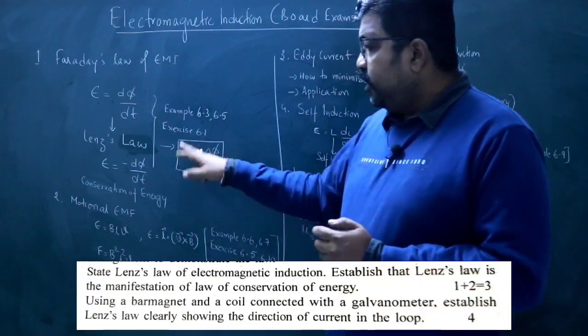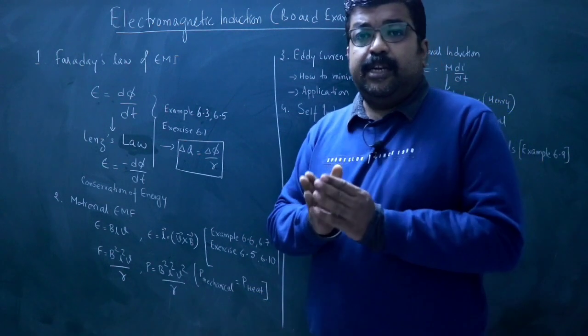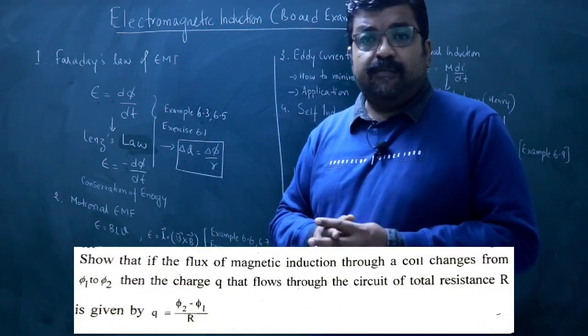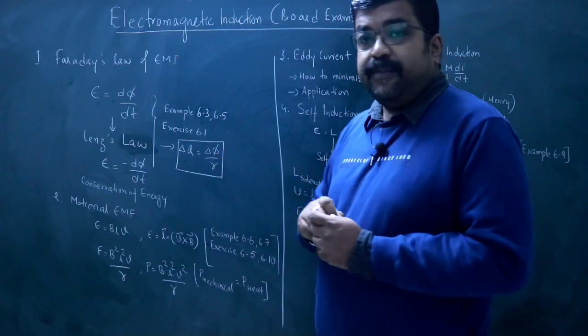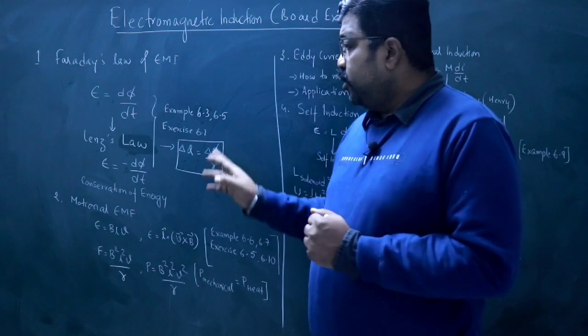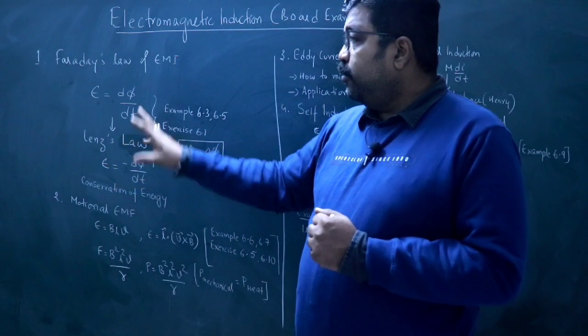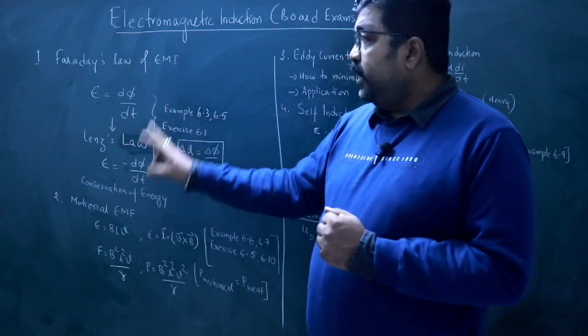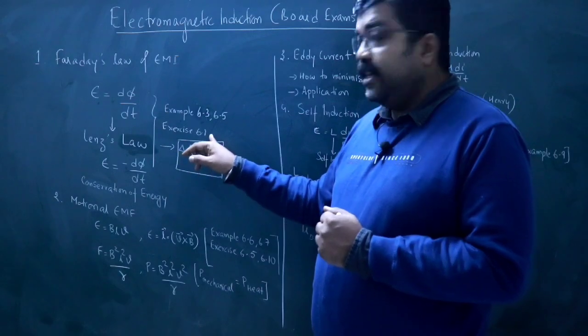This is a small relation. Delta Q is equal to delta phi by R. Delta Q is the amount of charge that is flowing through a coil. The flux in the coil is delta phi and the resistance of the coil is R. So we can learn this derivation. You have to learn these things in Faraday law and Lenz's law. Then you have to learn examples and questions about the exercise.